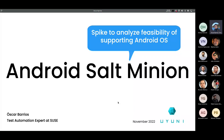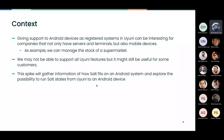During two weeks I did a small spike to analyze if we can somehow support Android devices in Uyuni. The idea is to support at least some basic features from Uyuni on Android devices — for example, Android devices that you can have in a supermarket where you need to handle the stock, or things like finding the GPS location of these devices.